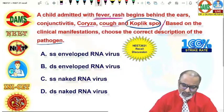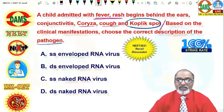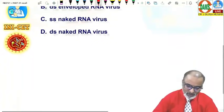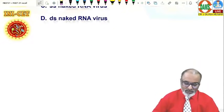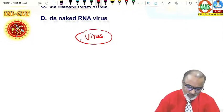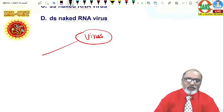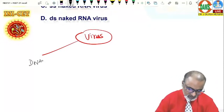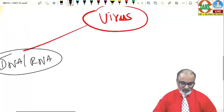Based on the clinical manifestations, choose the correct description of the pathogen. So it is a viral disease, measles. So what is the basic description of measles virus? Any virus, you need to know three basic points. That's the concept. Number one, what about the nucleic acid? It is DNA virus or RNA virus? One is based on the nucleic acid.